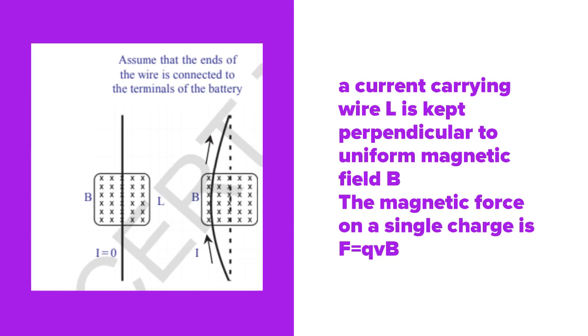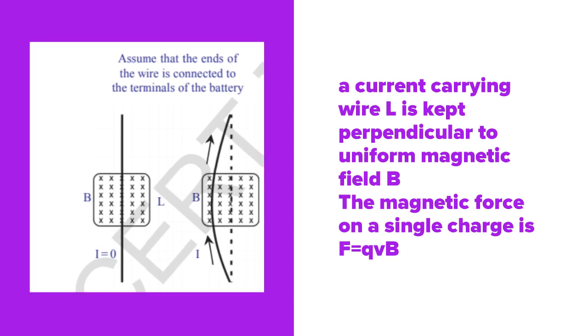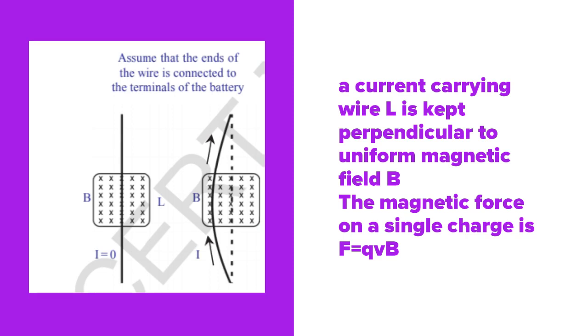Current I is flowing through that wire. Here we are taking only a single charge, Q. Then the force acting on that wire is F = qvB. Here Q is the single charge, v is the velocity of the single charge, and B is the magnetic field.